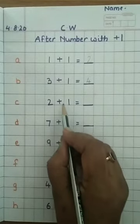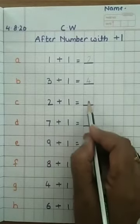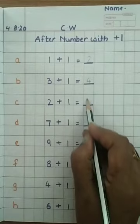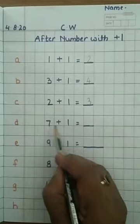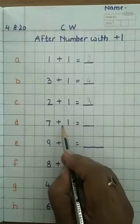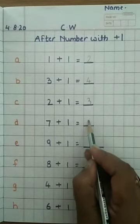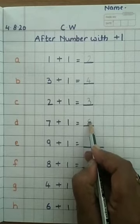2 plus 1 more, then what will be the after number? Number 3. 7 plus 1 more, then what will be the after number? Number 8.